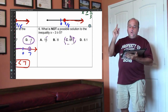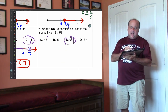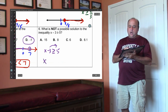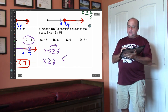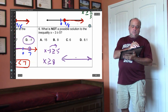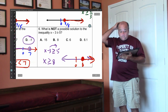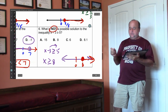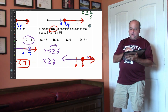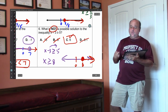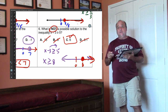On number 6, we want the one that is NOT a possible solution. Write down x minus 3 greater than or equal to 5. Move over the 3, and we want all our answers to be more than 8. Draw a number line with 0 and 8. Closed dot — that means 8 works — and the arrow goes to the right. Now we want the one that's not a solution. 15 is a solution. 8 is a solution. 6 is not a solution. 8.1 is a solution. So 6 would be the one that does not work because it's not in the answer set.